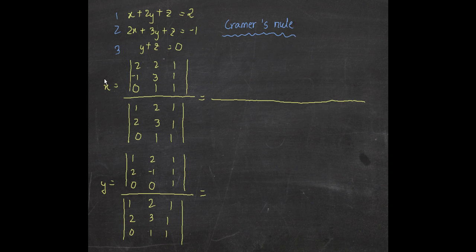We write the same coefficient matrix in the numerator too, except for one change: since we're trying to find x, we replace the x-column with the values after the equal sign. So instead of one, two, zero for the x-coefficients, we write two, minus one, and zero in the place of the x column.